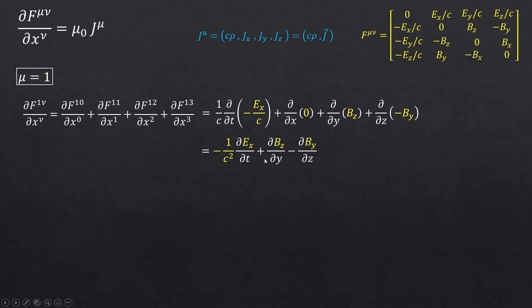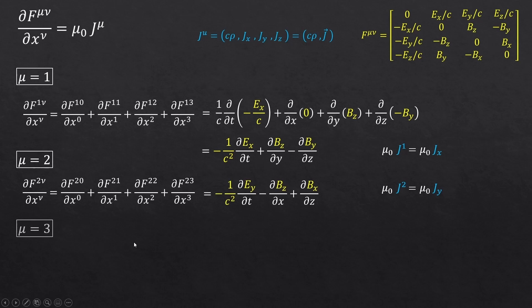So, in the end, we'll have these three terms left. Let's look at the right-hand side. Mu is equal to 1. So, the right-hand side is simply mu naught times x component of j. You could pause the video for a moment and try to obtain the other two cases, when mu is equal to 2 and mu is equal to 3. You'll see that we'll have these similar-looking equations.